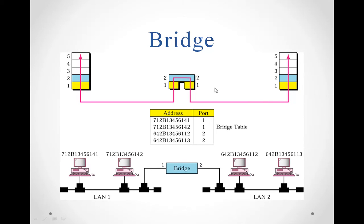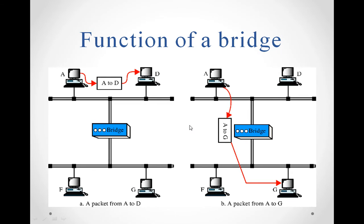Let us discuss bridges in more detail with a diagram showing the filtering function. Here, computer A is the source computer transferring a message to computer D, which is within the same single LAN — this does not require a bridge. However, if computer A wants to send a message to computer G, which is in another LAN, then a bridge is required.